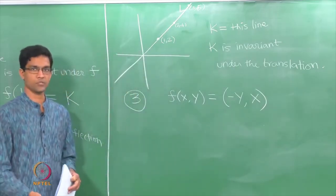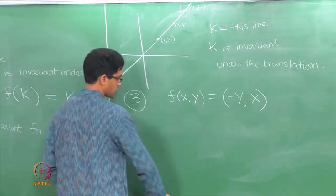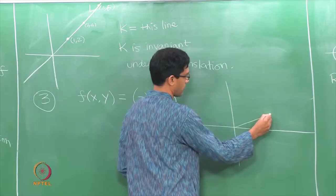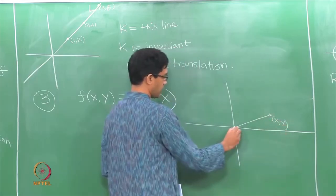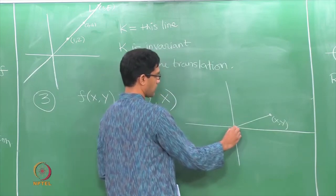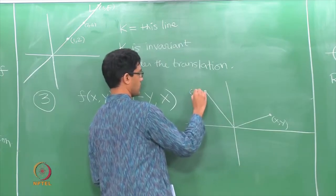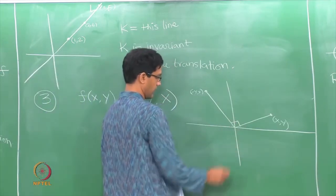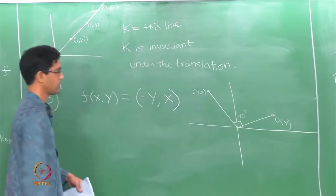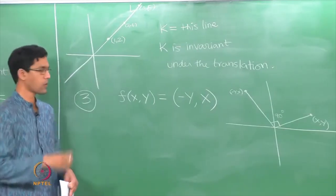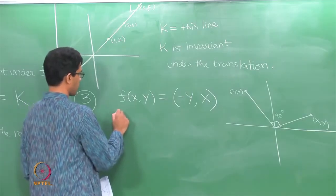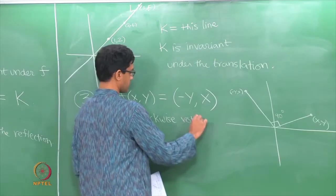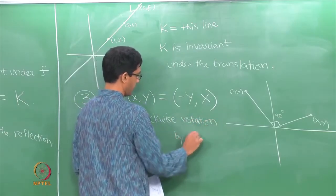Here is another example: f(x, y) = (−y, x). Let us see what this does to points. If I have a point (x, y), the new x-coordinate is −y and the new y-coordinate is x. If you compute the angles, you find this corresponds exactly to a 90-degree rotation. So this map is nothing but the anticlockwise rotation by 90 degrees — it takes every point and rotates it counterclockwise by a 90-degree angle.